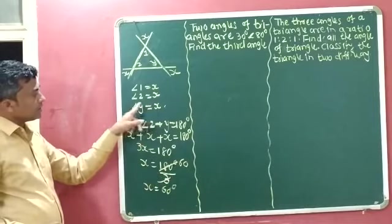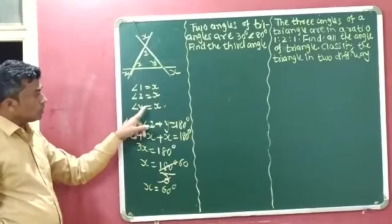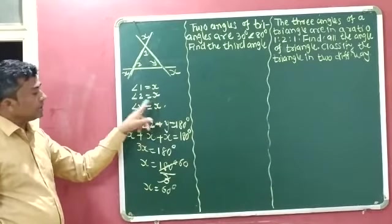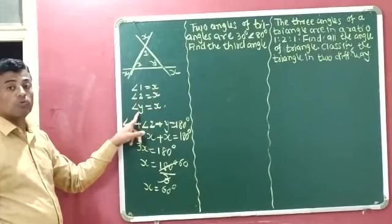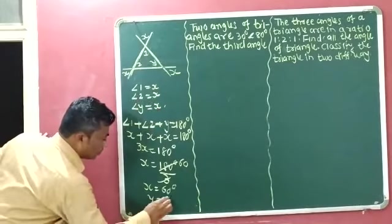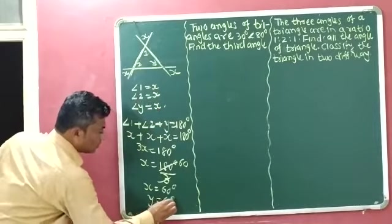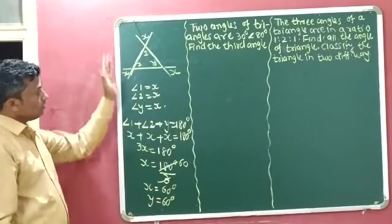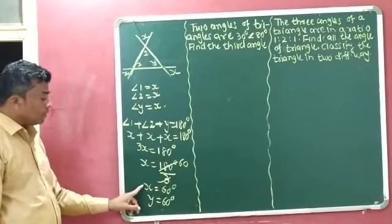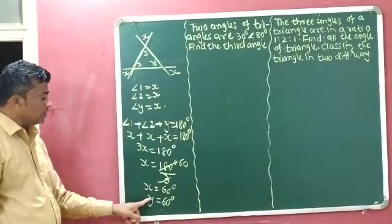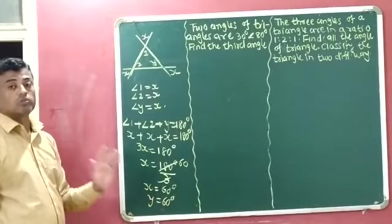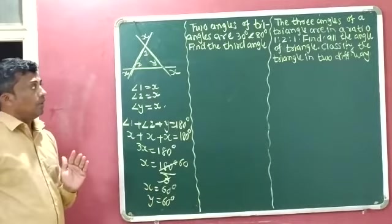Now, since x is equal to angle y as well, whatever the value of x, it is also the value of y. So y is also equal to 60 degrees. Final answer: value of x is equal to 60 degrees and value of y is equal to 60 degrees.